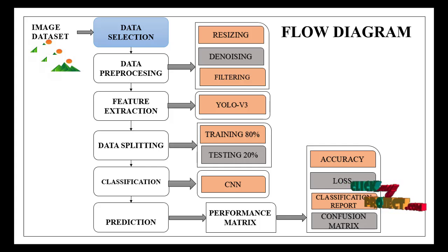In feature extraction, we have to implement YOLOv3 net. Data splitting is training and testing, 80% and 20%. Apply the classification algorithm CNN, prediction, performance analysis with accuracy, loss, classification report, and confusion matrix.